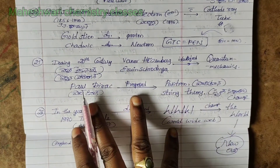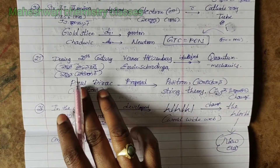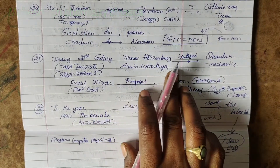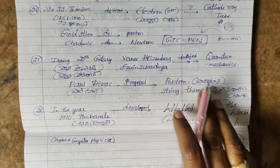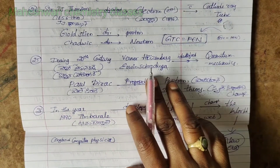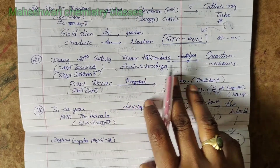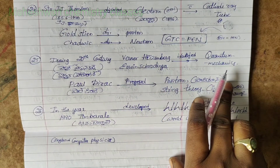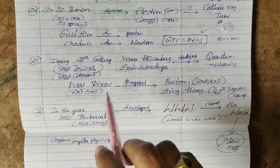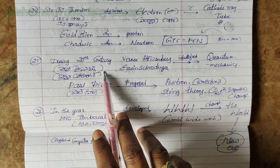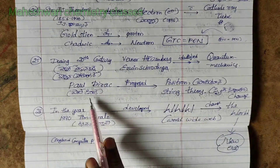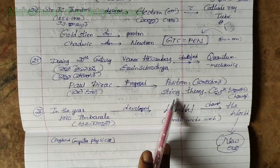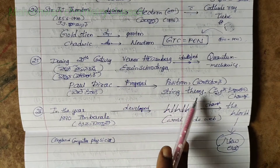25th point: During the 20th century, Werner Heisenberg and Erwin Schrödinger identified quantum mechanics. Next, Paul Dirac proposed the existence of the positron, related to string theory.